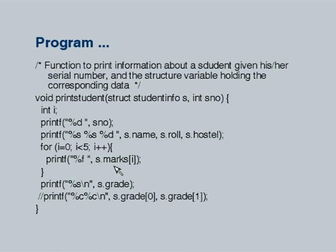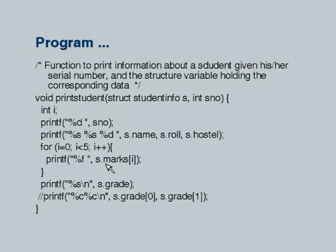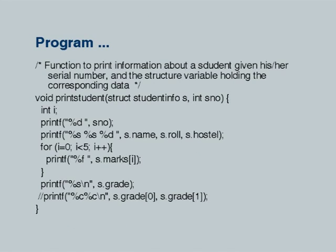This will print the marks in the first test, second test, third test, fourth test, and so on. If this function is invoked initially where only roll number, name, and hostel are known, marks will be 0. The function further prints the grade: 'printf("%s\n", s.grade)'. I have shown here in a commented form an alternate way of printing a string array — if you give the name of the string array like grade, all elements of that array are printed. But if you want to print individual characters, s.grade[0] and s.grade[1] can be printed using the %c format specifier.